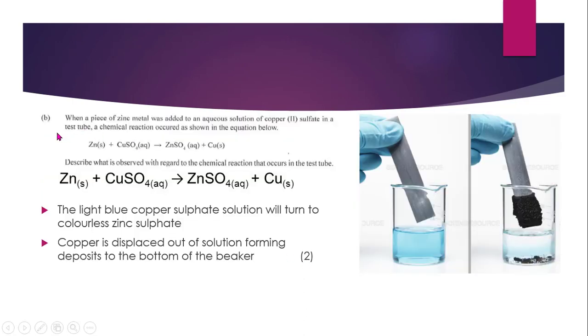Part B. When a piece of zinc metal is added to aqueous solution copper 2 sulfate in a test tube, a chemical reaction occurred as shown in the equation below. We have zinc plus copper sulfate to give us zinc sulfate and copper. Describe what is observed with regard to the chemical equation that occurs in the test tube. The main focus here is describe what is observed. They did not say explain what happens. This is worth 2 marks. So what you should do is to describe 2 observations.